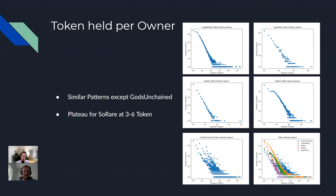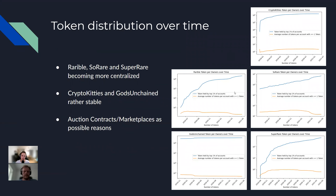What is also interesting is in SoRare, there's an interesting plateau at three to six tokens, and we aren't really sure what causes this. Then we looked at the token distribution over time — specifically the tokens held by the top 1% of accounts and the average number of tokens per account.